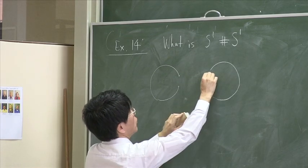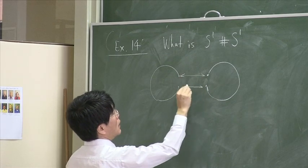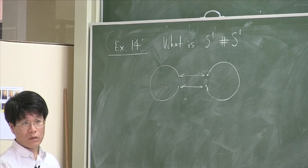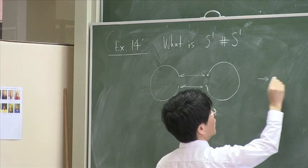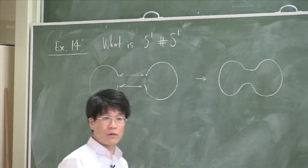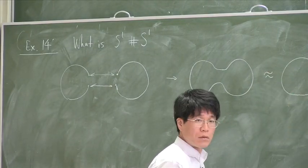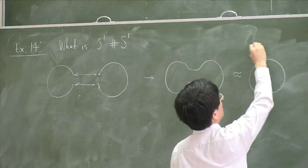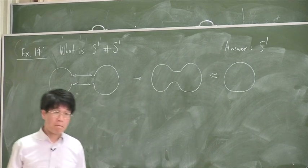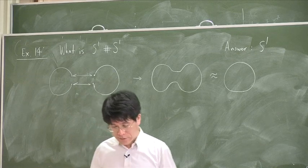Yeah? So we took this away. We took this away. And then now we have to identify the boundaries of those holes. So what you are going to get? This one. Well, you are going to get something like this. It's a curve. But that's, of course, homeomorphic to this. So the answer is that it's, again, S¹. So connected sum of S¹ and S¹ is just S¹. That's very easy.